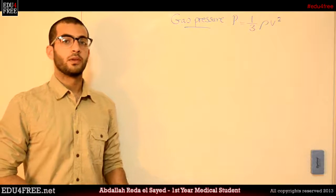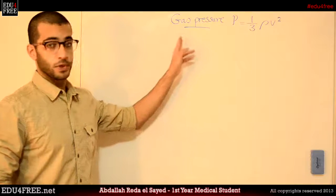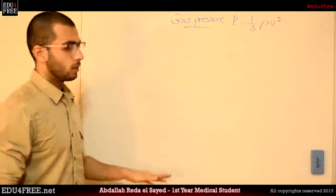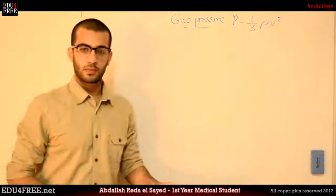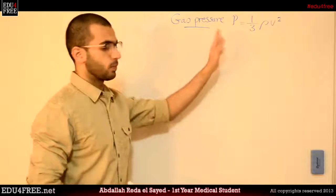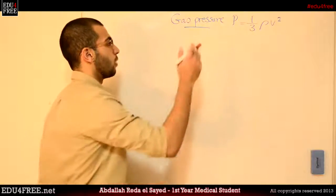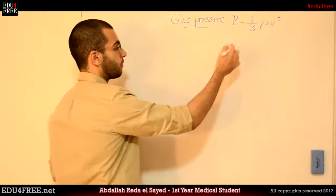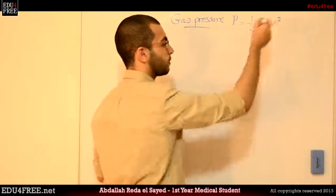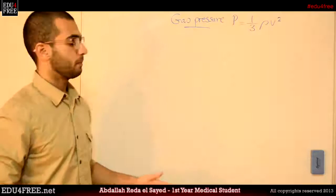Assalamu alaikum. Today we are going to talk about the gas pressure. There is a law for the gas pressure that says that the pressure equals one third multiplied by the density of the gas multiplied by the square of the velocity.